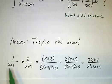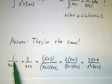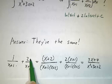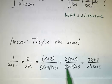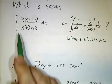If you expand out 1 over x plus 1 plus 2 over x plus 2, if you put them over a common denominator, where you multiply this by x plus 2 over x plus 2, and you multiply this by x plus 1 over x plus 1, you get 3x plus 4 over x squared plus 3x plus 2. These are in fact the same.